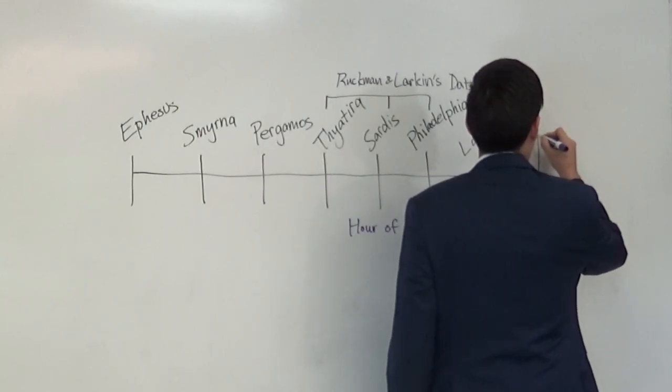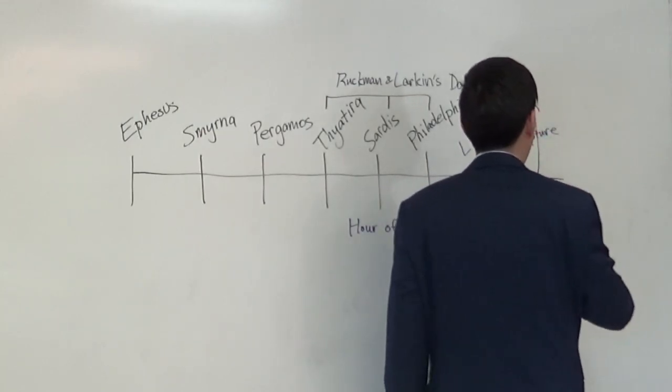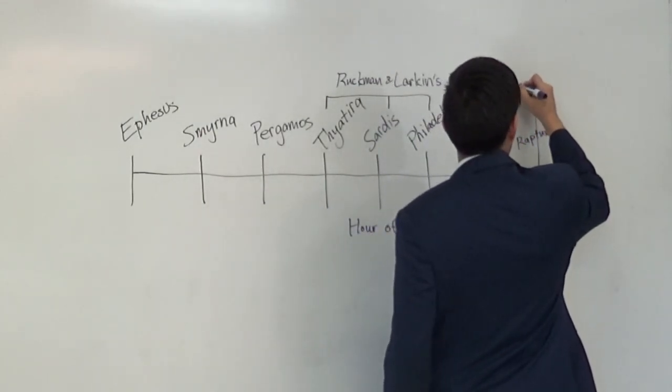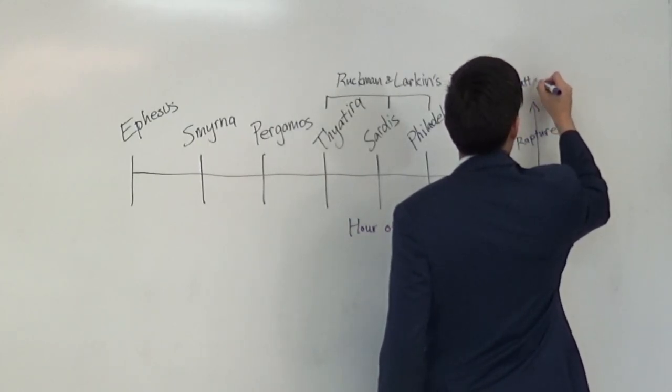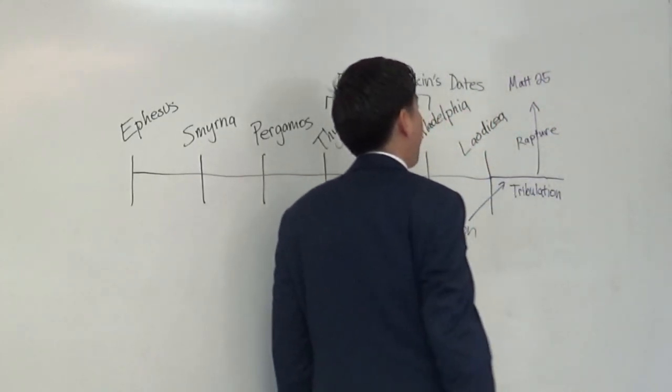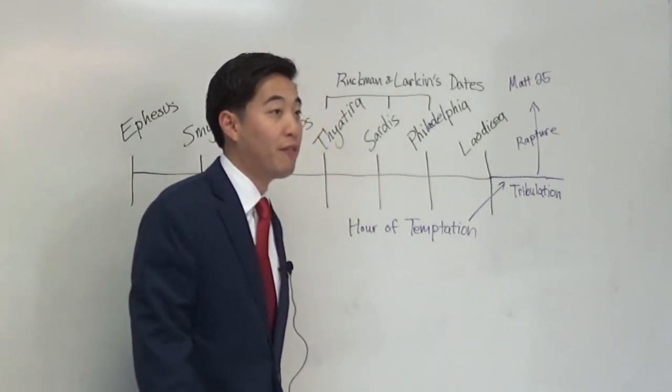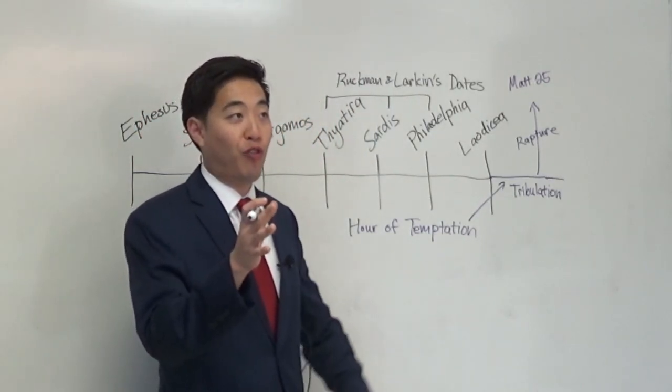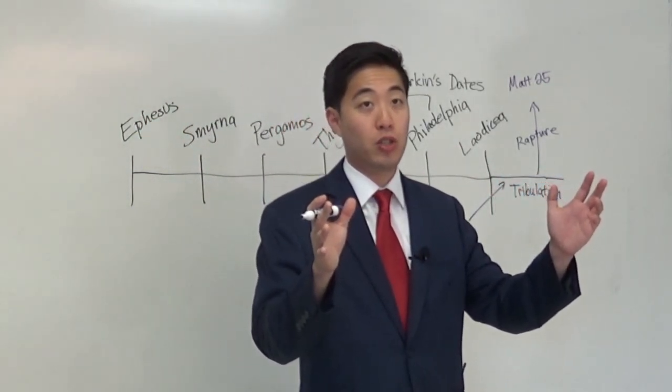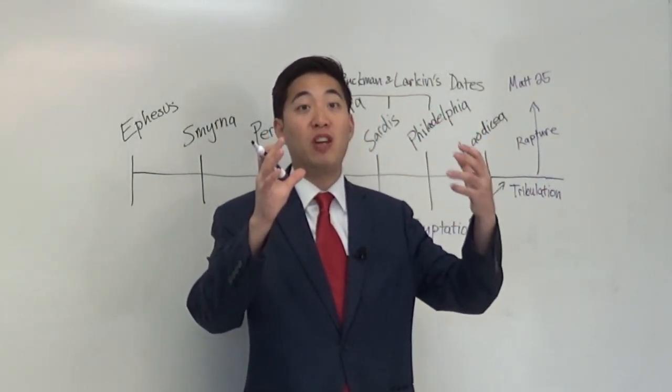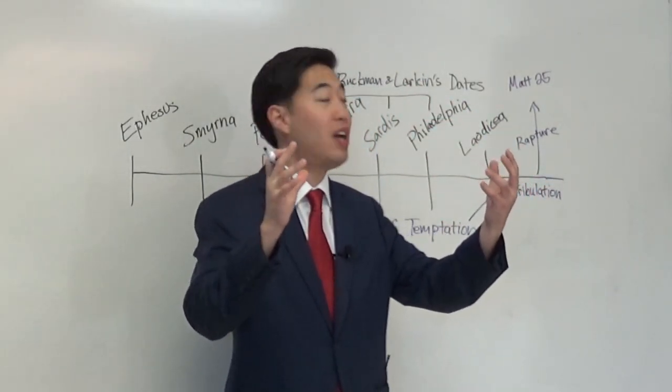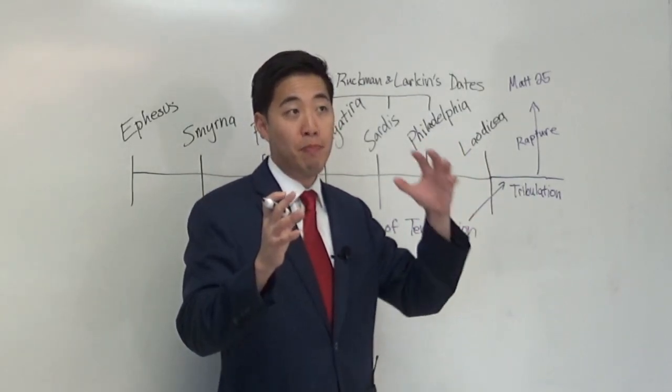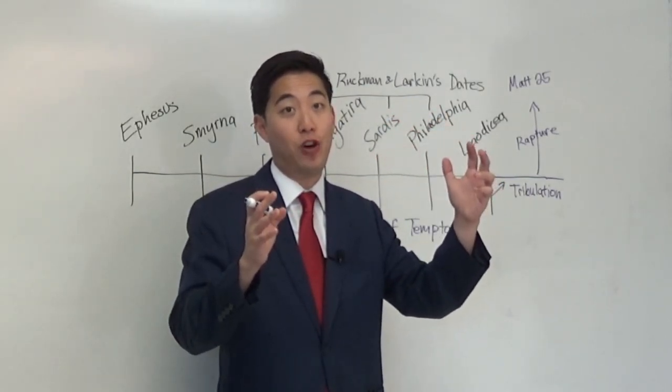There is a rapture that is conditional. Now, we read that before, so I'm not going to do it again. But Matthew chapter 25, if you read the first verses of Matthew chapter 25, there were five foolish virgins and five wise virgins. So notice that these particular tribulation saints that were wise, like Philadelphia, because they were patient, they were faithful,